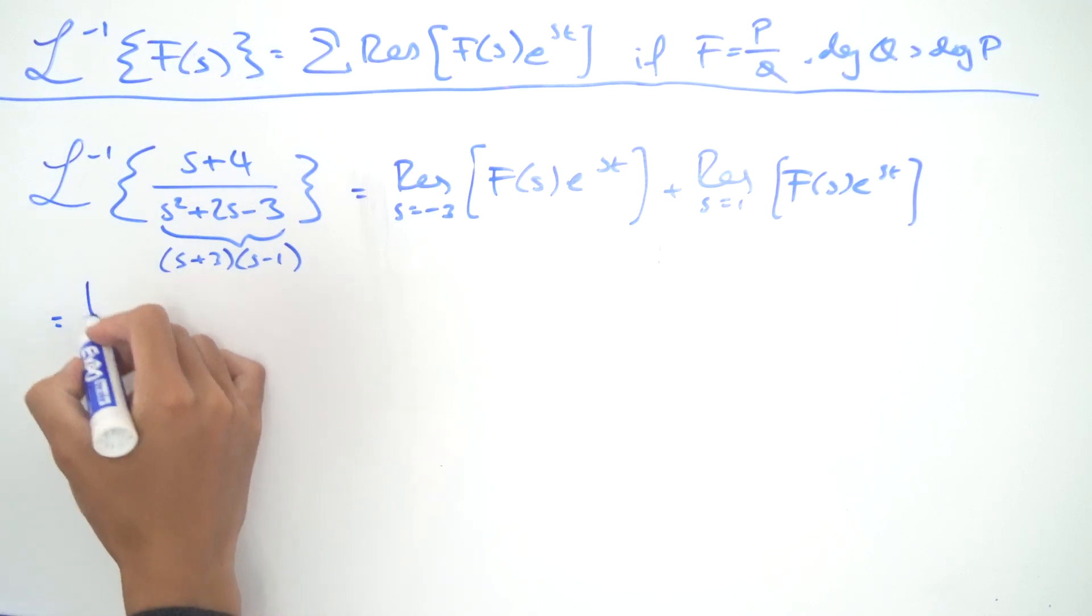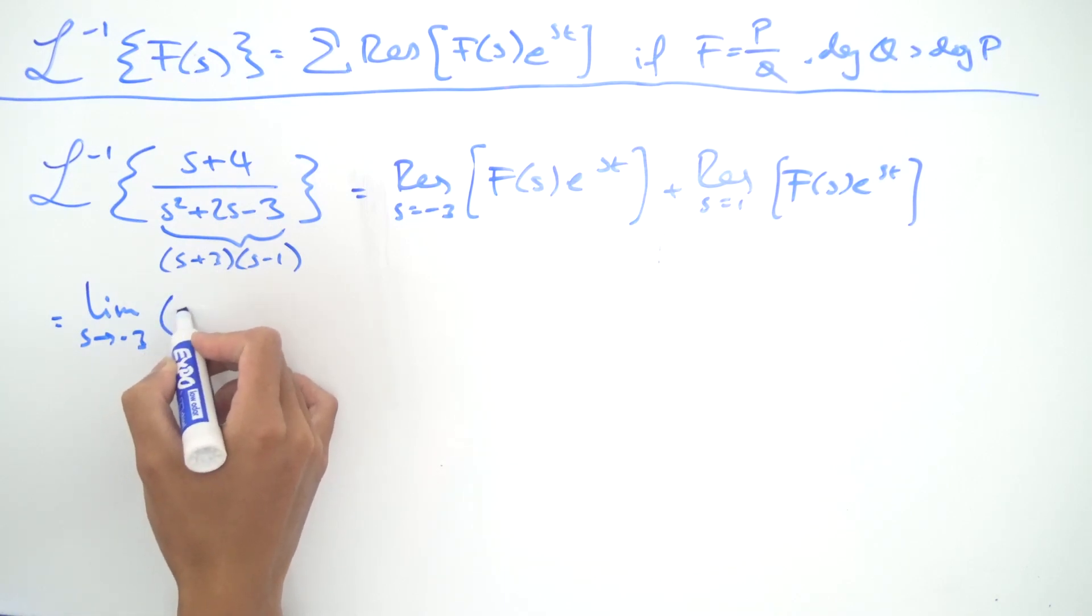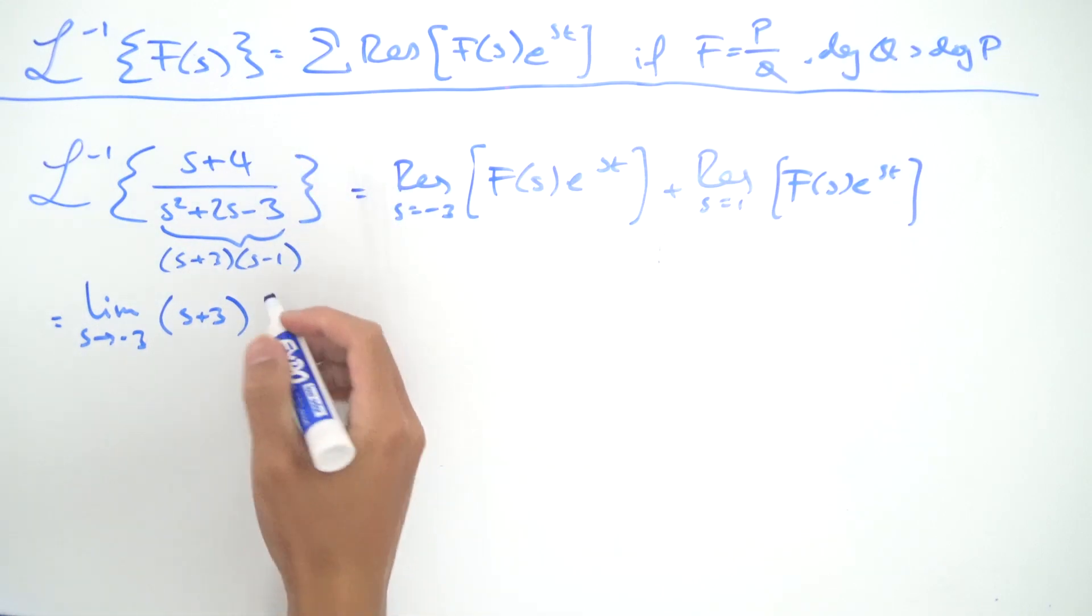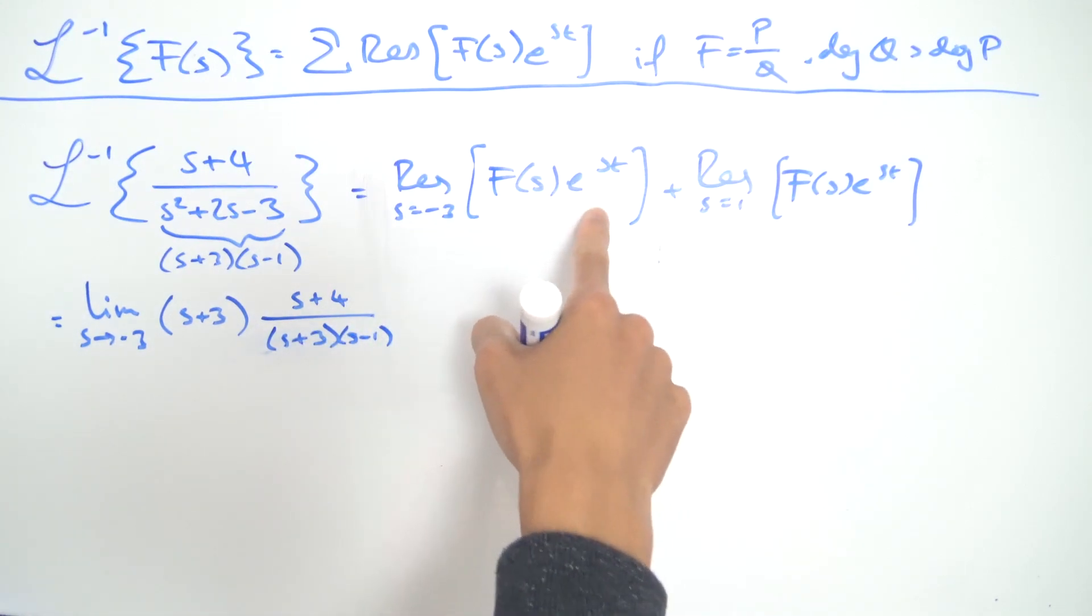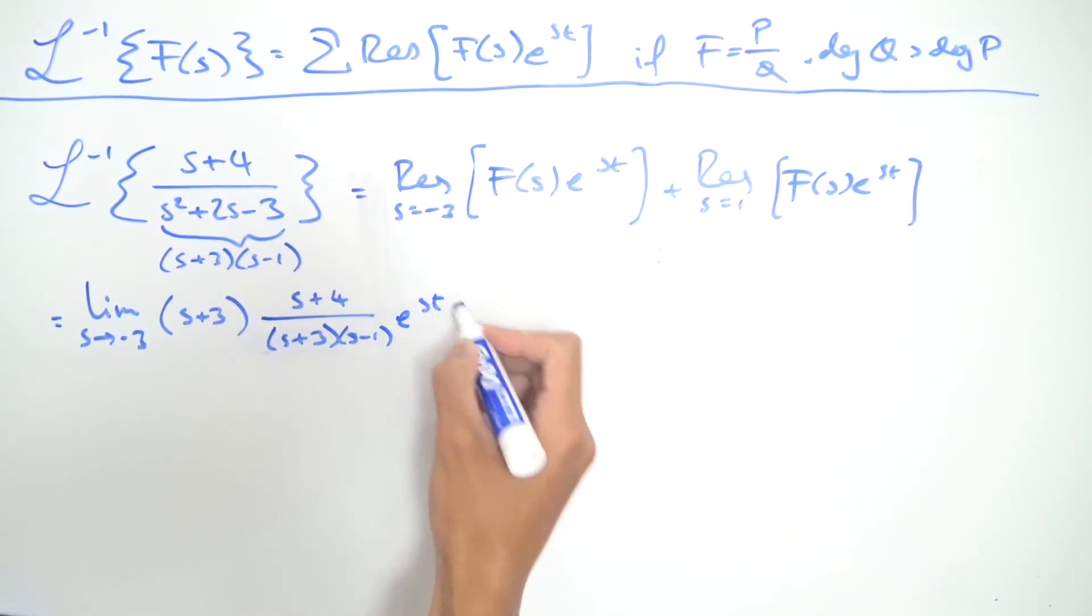So that's going to be the limit as s approaches first of all minus three of s minus the pole which is just s plus three in this case, times our function over here which I'm going to write as (s+4) over (s+3)(s-1), and don't forget the e^(st) we still have that.